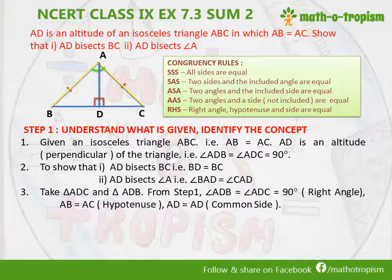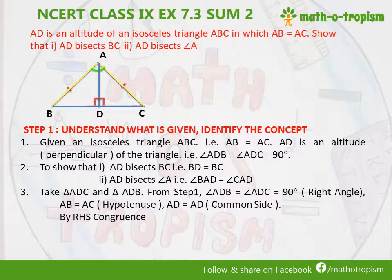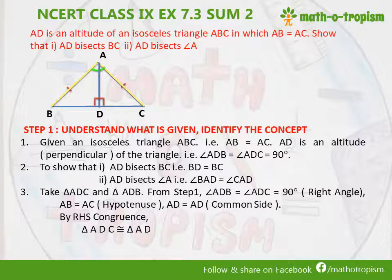Here we can see that AB and AC are nothing but the hypotenuse. We have the common side AD as the side, and the 90 degree angle. So by RHS congruence, considering triangle ADC — vertex A corresponds to A, vertex D corresponds to D, and vertex C corresponds to vertex B.